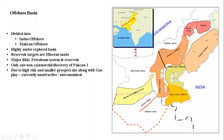Miocene sands and carbonate platforms are the reservoir targets. The major risks involved in the petroleum system include the existence of a complete petroleum system. If there are many elements that are missing in one place, the uncertainty of the exploration and production will increase.